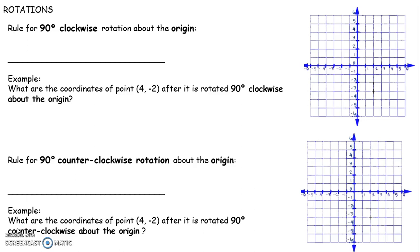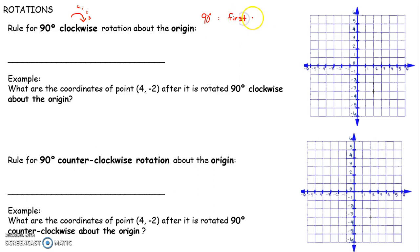Let's talk about the rule for 90 degrees clockwise about the origin. Clockwise — clocks go this way. If you're at 12, then 1, then 2, then 3, that's the way the clock goes. For a 90 degree rotation, I do: first reverse — arrow — change the sign.